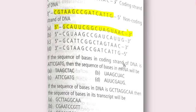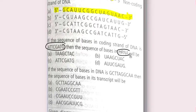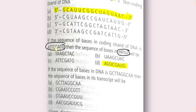Next question: if the sequence of bases in the coding strand of DNA is ATTCGATG, then the sequence of bases in the mRNA will be? The coding strand configuration is equal to that of mRNA because what is copied is the template strand. The answer has the same sequence as the coding strand, but with uracil in place of thymine.